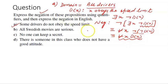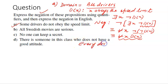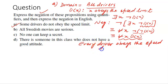Next, we have to write the negation in English. The translation looks like: every driver obeys the speed limit. So this is the first question. I hope it has made sense. Let us take the next problem: 'All Swedish movies are serious.' Let us move to the next page.